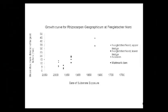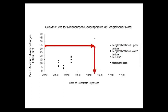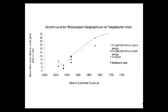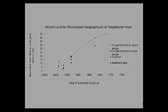You then need to plot a lichen growth curve. You will need to plot the mean maximum diameter against the date of substrate exposure at given locations. You should then draw a growth curve through the largest diameters.